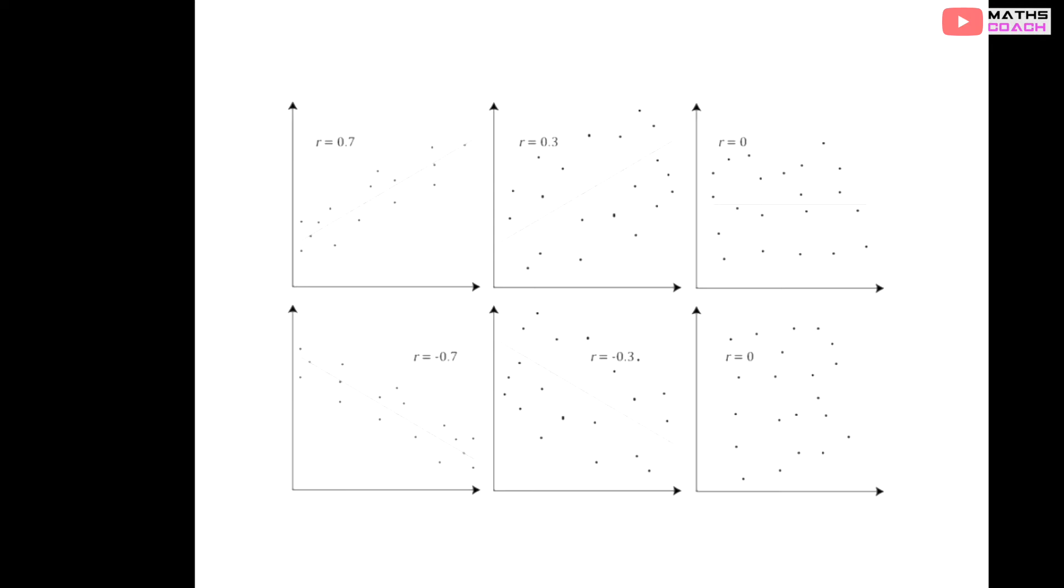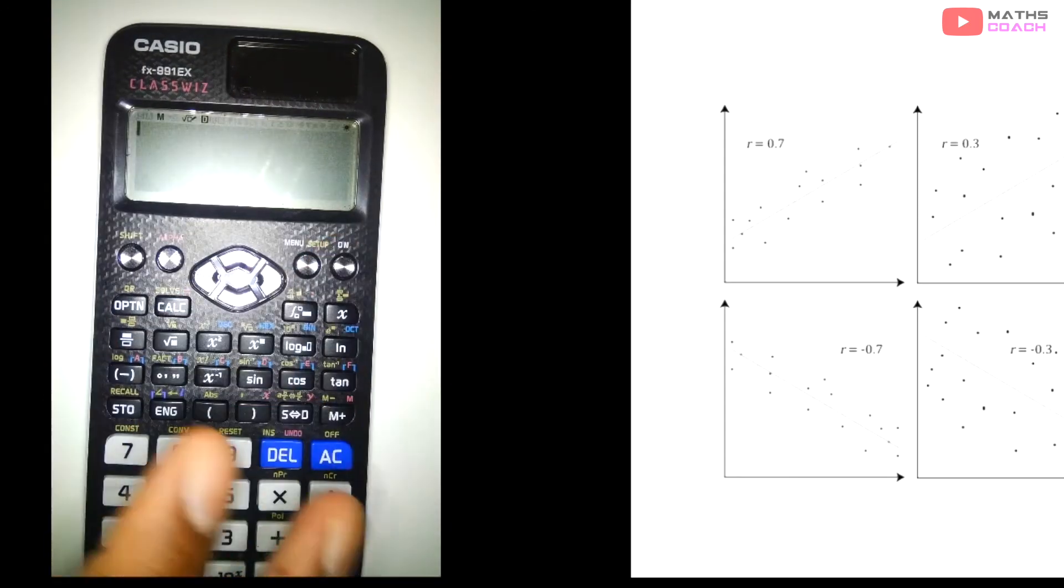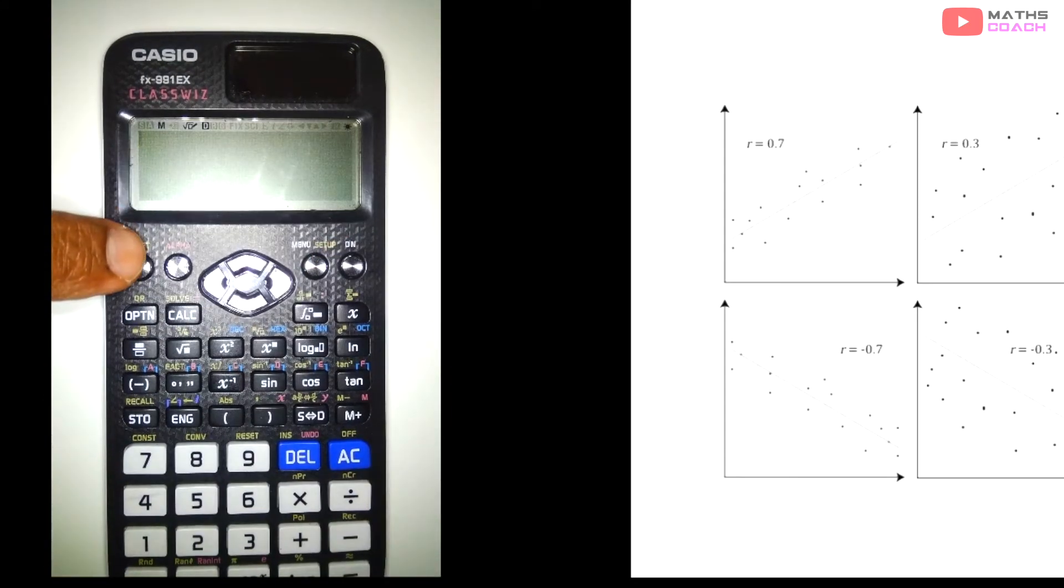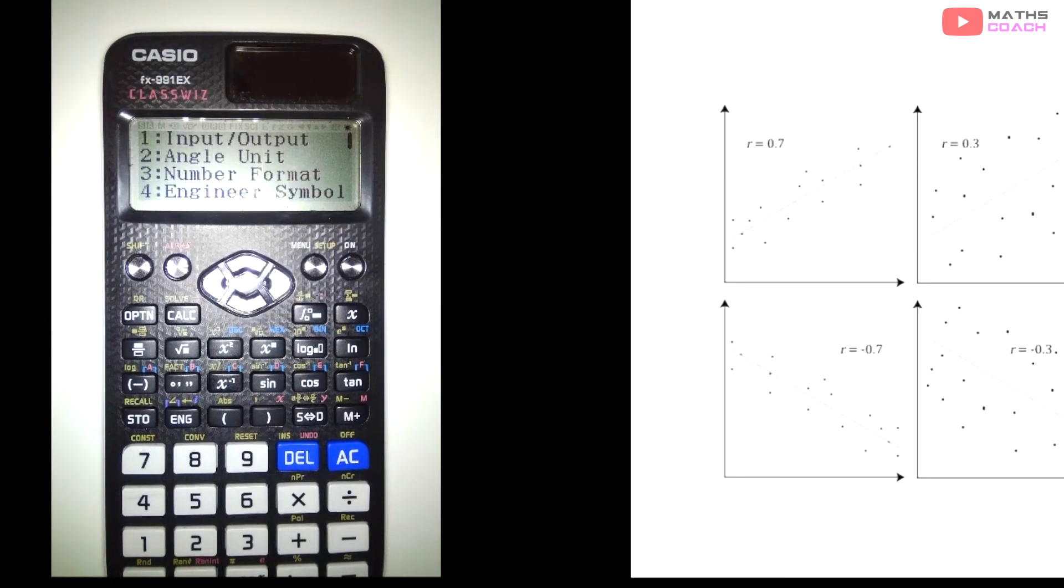Now, before we do our first example, we need to know on our calculator how we set up PMCC. The first bit we need to do is set it up. We need to start off with pressing Shift and Setup. If you go to Shift Setup, you see 1, 2, 3, 4. But we're going to scroll down and you see further numbers 1, 2, 3, 4. And we're going to go to number 3, and that's statistics. You'll see here we have Frequency 1 representing on, Frequency 2 representing off. We need Frequency off, so we're going to go to number 2.